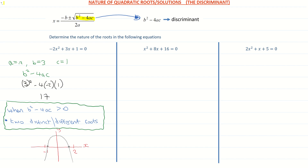Looking at the second example: x squared plus 8x plus 16. In this example, a is going to be positive 1, the coefficient of x squared; b is the coefficient of x, which is 8; and c is our constant, 16. Subbing them into the discriminant, b squared minus 4ac, I get 8 squared minus 4 times 1 times positive 16, and working that out I'm getting 0.